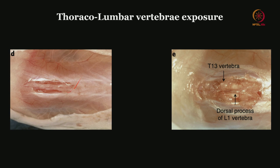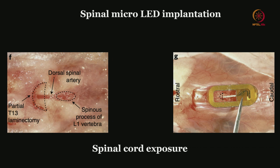Once you do that, you expose the spinous process. These steps we have already gone through for the laminectomy discussion. Once the spinous process and the vertebrae are exposed by dissecting the muscular tissue all around, you are ready to make a laminectomy. A partial laminectomy has been done — what you are seeing in the midline is the dorsal spinal vein, and then you can see the dura covering the spinal cord. Once that step is achieved, the next steps depend on what sort of implant you are planning to do.